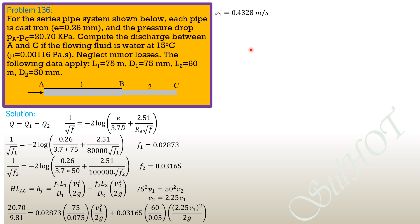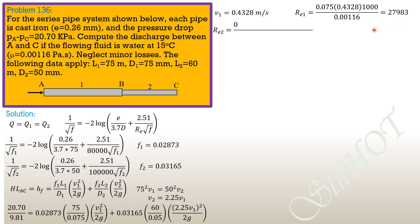We now compute the new Reynolds numbers. Re1 equals (0.075 × 0.438 × 1000) / 0.00116, giving 27,983. Reynolds number 2 equals (0.05 × 2.25 × V1 × 1000) / 0.00116, giving 41,974.